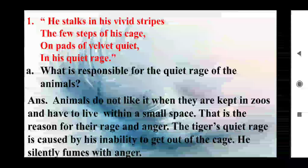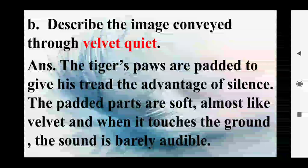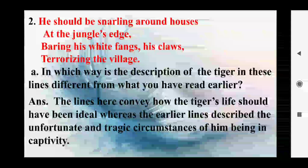He silently fumes with anger. Part (b): Describe the image conveyed through 'velvet quiet.' Answer: The tiger's paws are padded to give his tread the advantage of silence. The padded parts are soft, almost like velvet, and when it touches the ground the sound is barely audible.